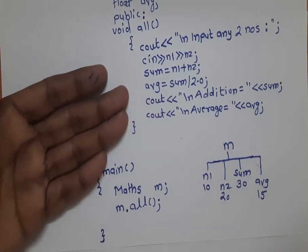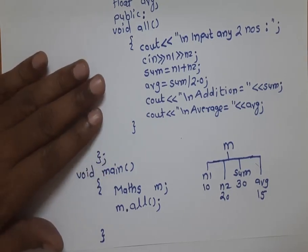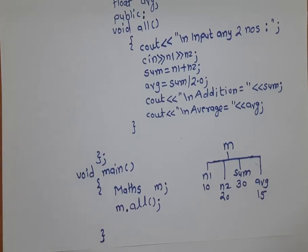In the next video we will check why this object oriented programming system concept comes into the picture, because everything we did here we can also do in C programming. If this everything can be done in C programming, then why does C++ come into the picture? If you like this video, please subscribe to my channel so that whenever I add further videos on C++ you will get a notification. Thank you.